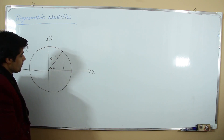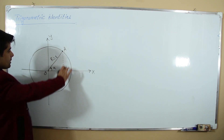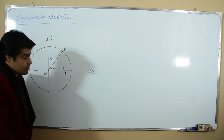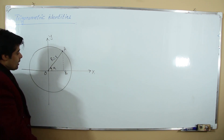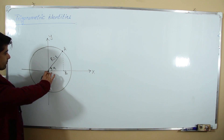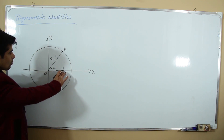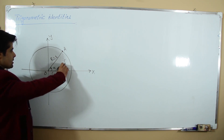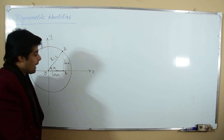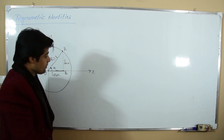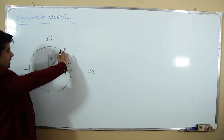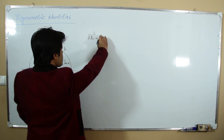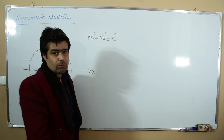The angle here is alpha, going anti-clockwise. Triangle OAB is our triangle inside the trigonometric circle. OB indicates the value of the cosine, and AB indicates the value of the sine. According to Pythagoras theorem, OB² + AB² = R².